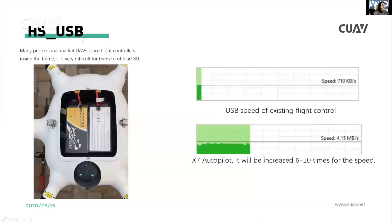Let me introduce the HUSB and USB improvement. You can see this drone — many professional market UAVs are using the V5 controller inside. If you want to access the SD card slot, it's very difficult. But if you use the HUSB USB interface, you can greatly improve the data transfer speed. The normal USB speed from the flight controller is around 710 KB/s. If you use the HUSB, the speed increases 6 to 10 times. That's a significant performance improvement.